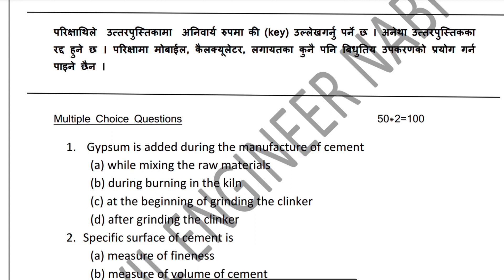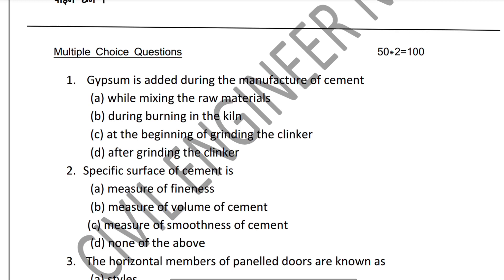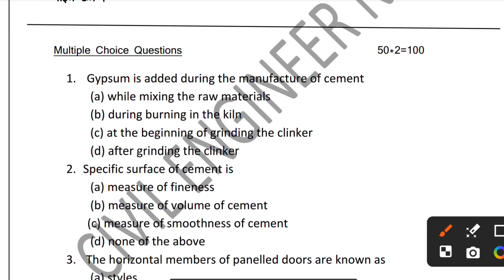Option C is the correct answer — gypsum is added at the beginning of grinding the clinker during cement manufacture.